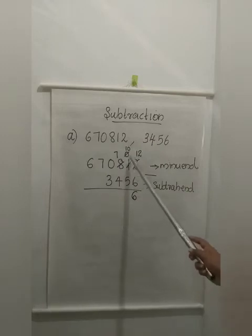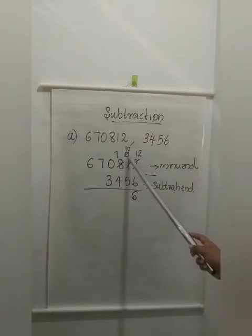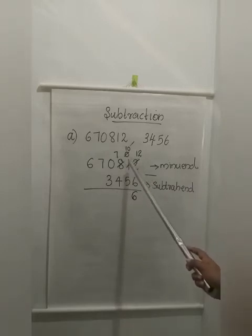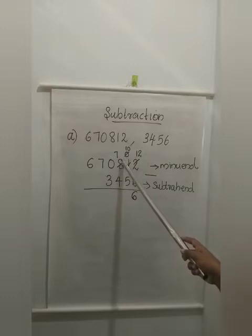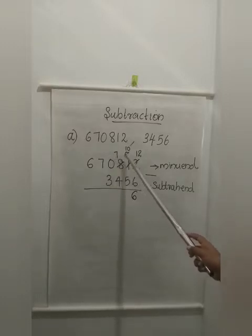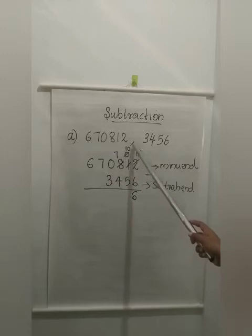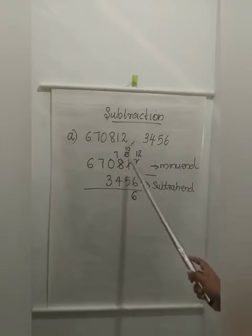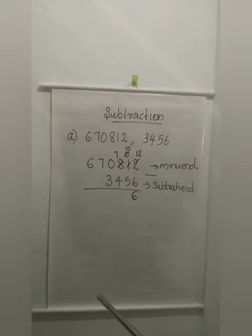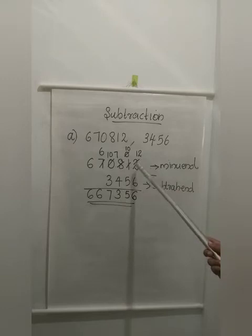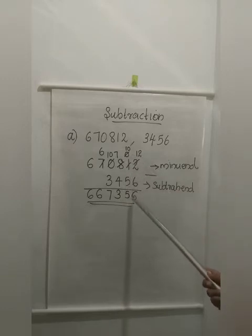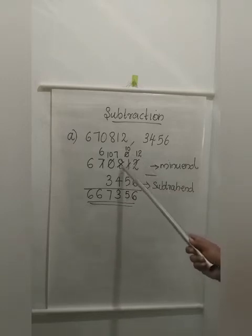Now I told here we borrowed from this 1, so this 1 becomes 0. Now we cannot subtract 5 from 0. So again the process of borrowing — borrowing from the very next digit, that is 8. So 8 changes to 7. Then this 0 changes to 10. Now 10 minus 5 is 5.